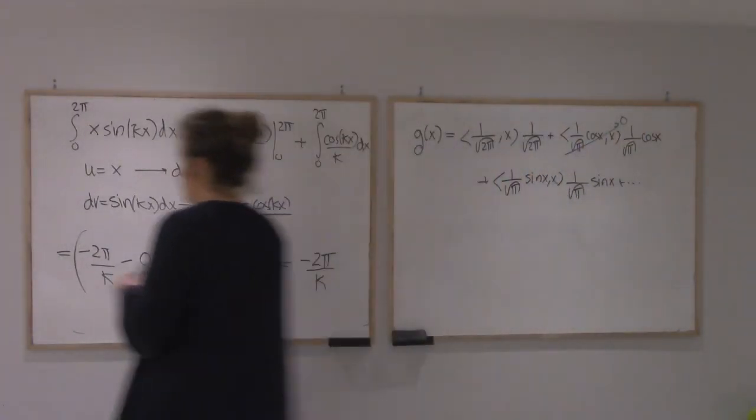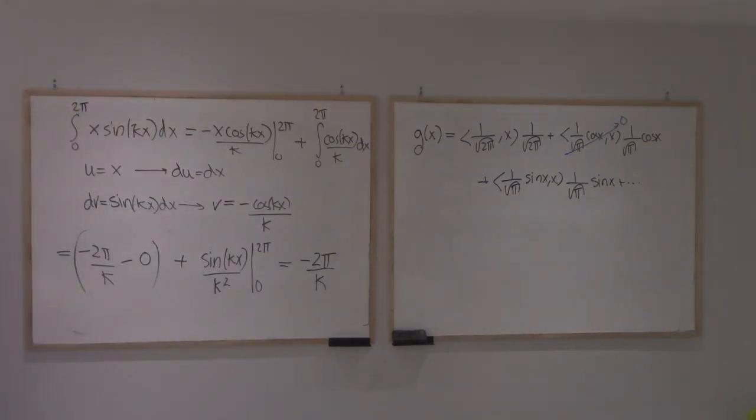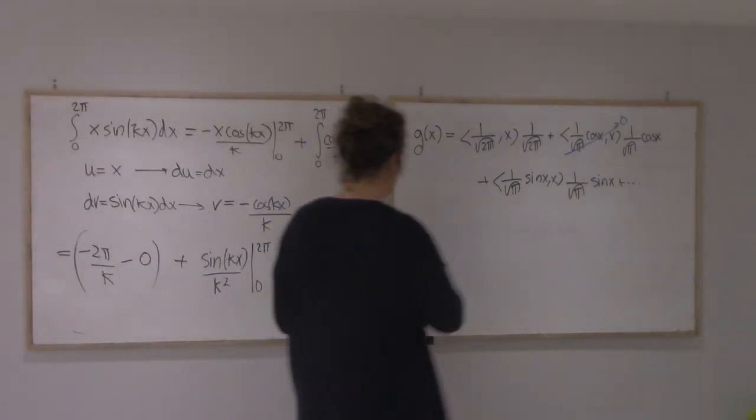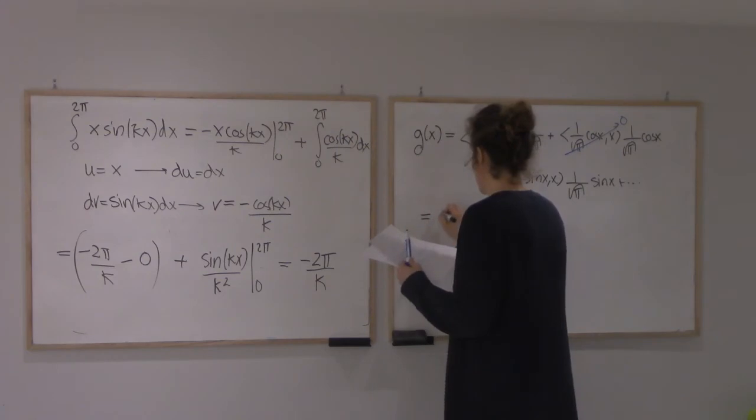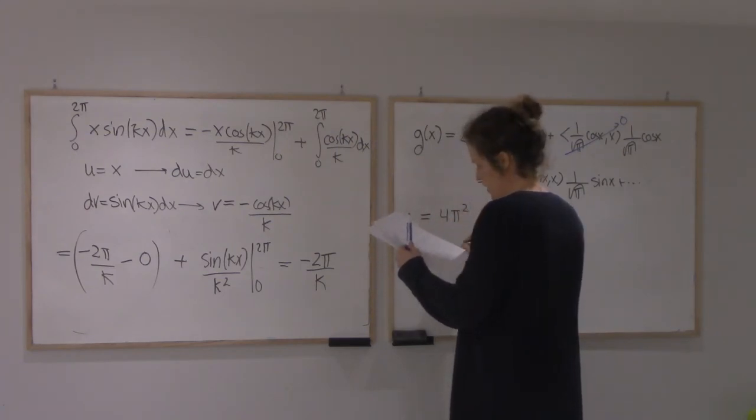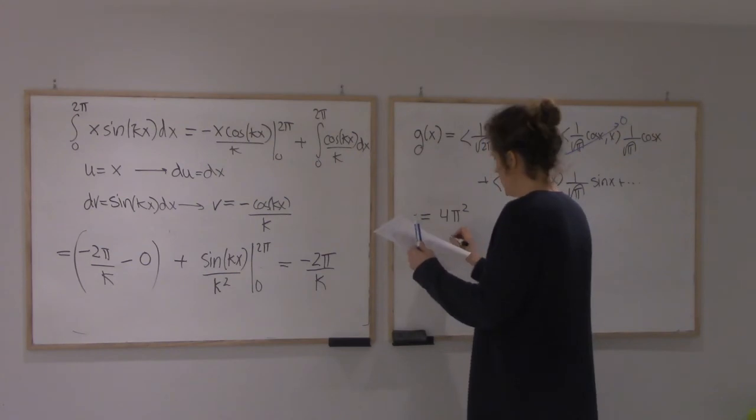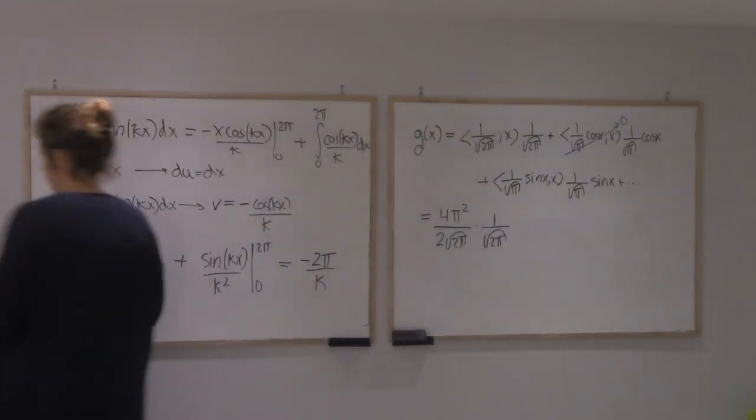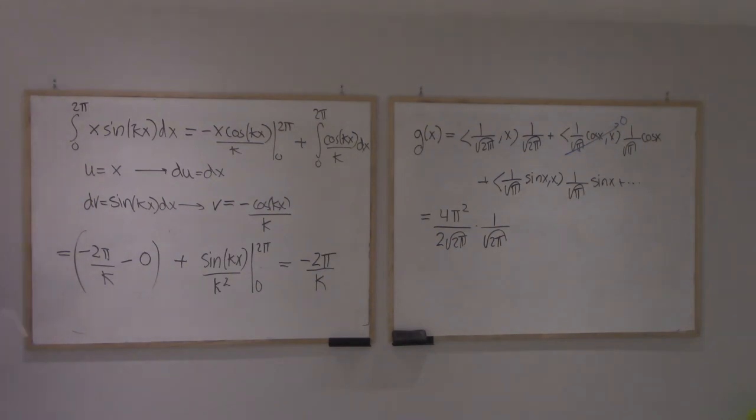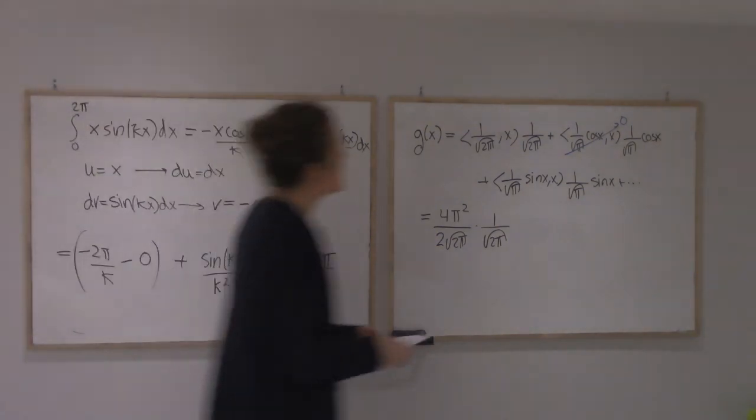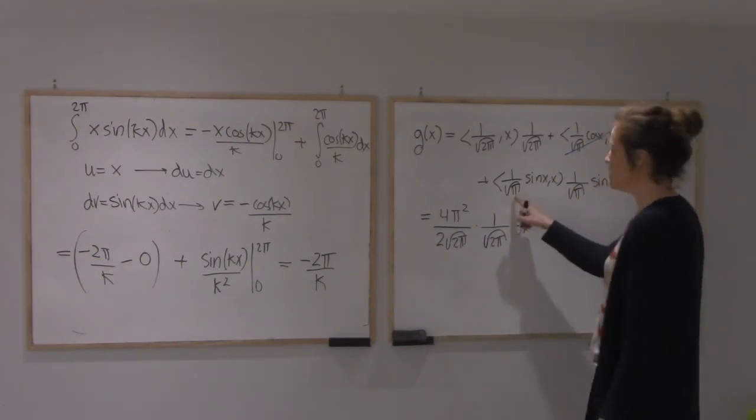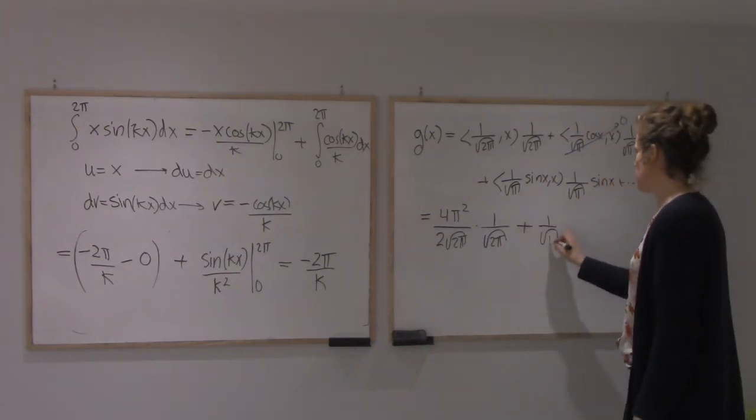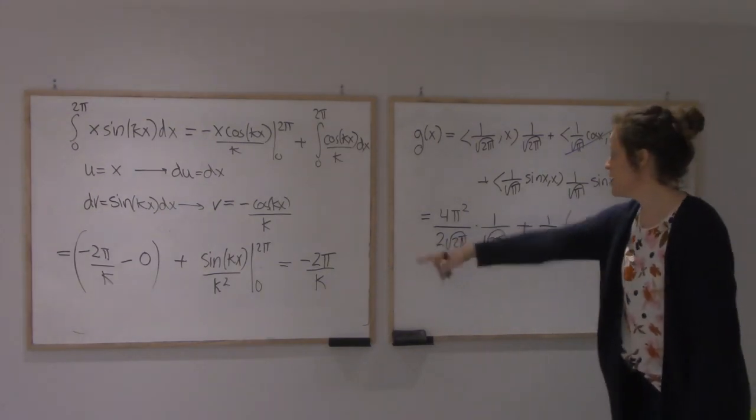So this will be 0. And this one we computed that gave us 4π squared over 2 root of 2π, and then I'm going to multiply this by root over root of 2π. Next one, the sine one. The integral didn't have the 1 over root π, so let me pull that up front. The sine gave me this.